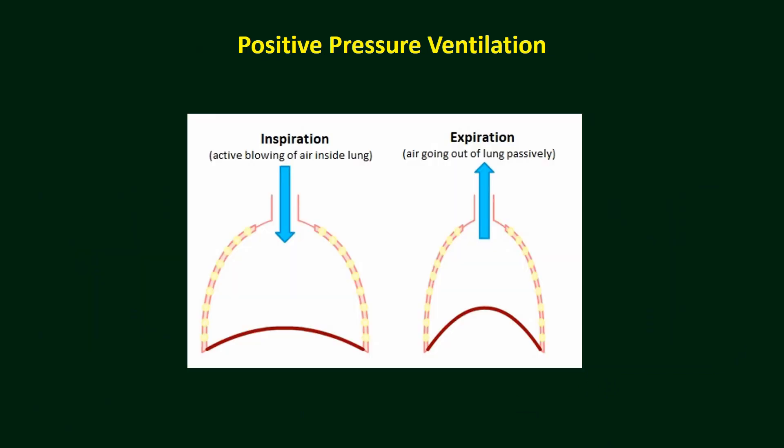During inspiration, the ventilator provides gas inside the lung with positive pressure. When inspiration ends, the ventilator stops providing air and the exhalation valve opens, allowing air to come out of the lung automatically and passively, and expiration begins. So expiration is a passive process.